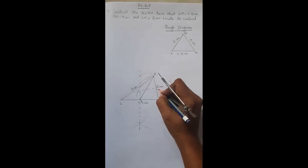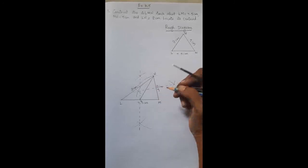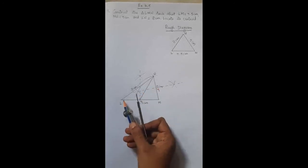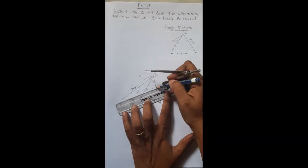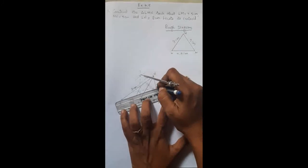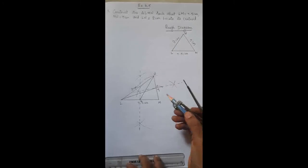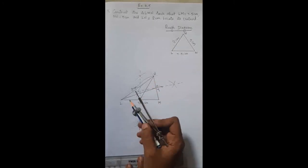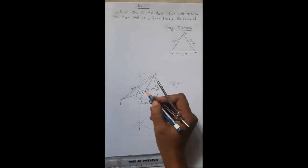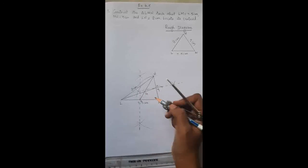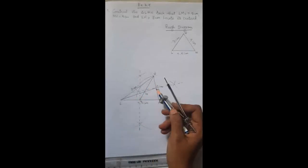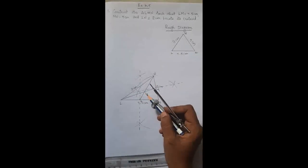Mark this intersection point as Y. Y is the midpoint of MN. The vertex opposite to Y is L, so join L and Y. Now NX is the median and LY is the median. Both medians meet at a point, which is called the centroid, denoted by capital G. This is how we locate the centroid for the given triangle.